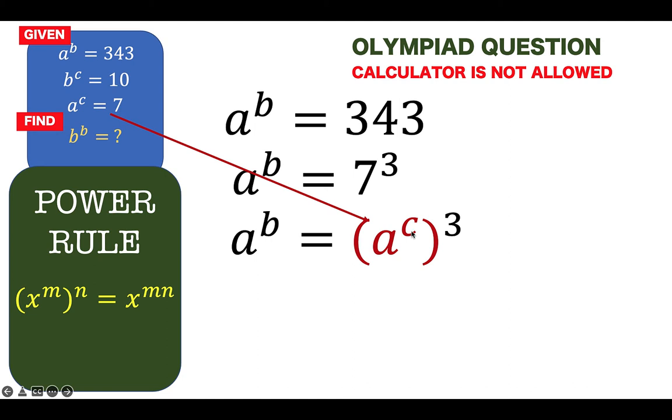So clearly from here, the quantity A raised to C raised to the third is exactly the same form as the left side of this power rule, and therefore this can be simplified similar to this right form. And therefore, we now have this equation: A raised to B is equal to A raised to the product of C and 3, which is 3C.